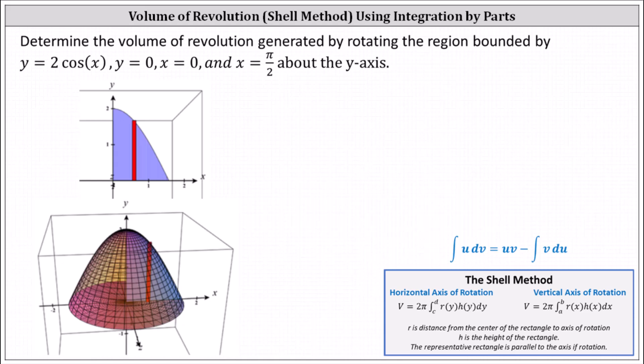I've already sketched the bounded region below. The curve is y equals 2 cosine x, y equals 0 is the x-axis, x equals 0 is the y-axis, and x equals pi divided by 2 is the vertical line where y equals 2 cosine x intersects the x-axis. We want to rotate this bounded region about the y-axis and then determine the volume. When rotating this region about the y-axis, we get the solid shown below.